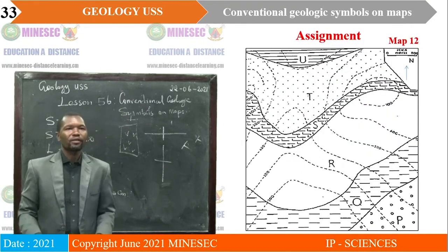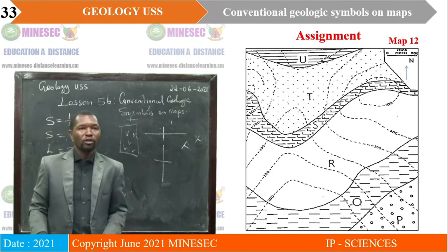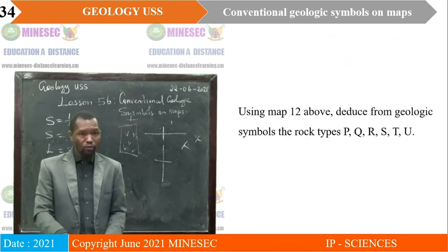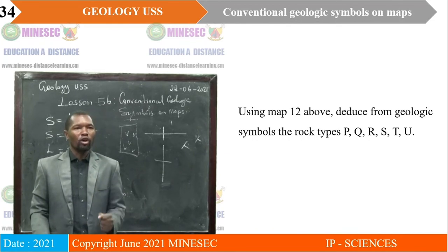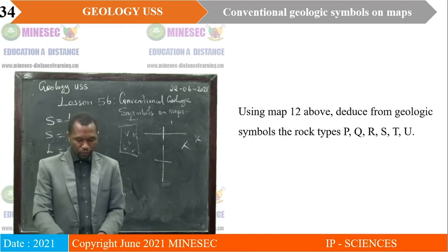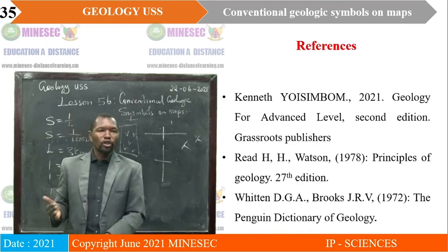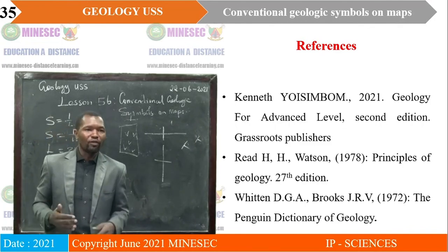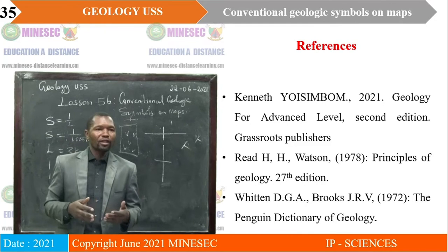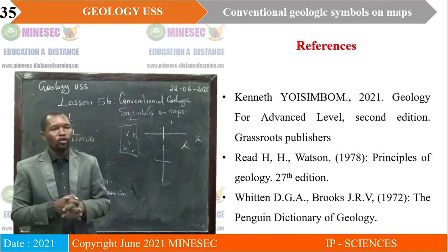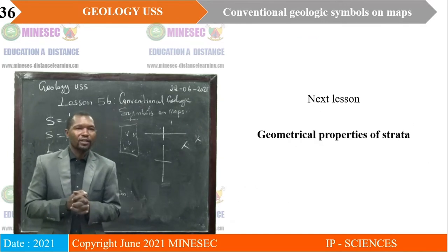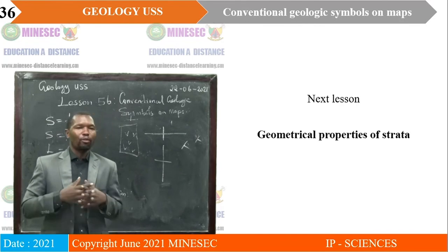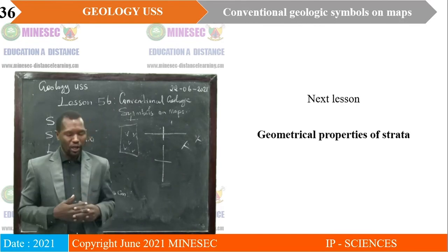For the assignment: using map 12, deduce from the geologic symbols the rock types labelled P, Q, R, S, T, and U. You may also use the textbooks 'Geology for Advanced Level,' 'The Principles of Geology,' and 'The Penguin Dictionary of Geology.' We have come to the end of our lesson. Our next lesson will be on geometrical properties of strata. See you in the next lesson.